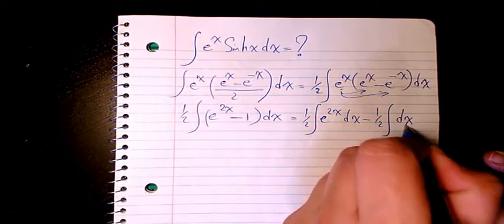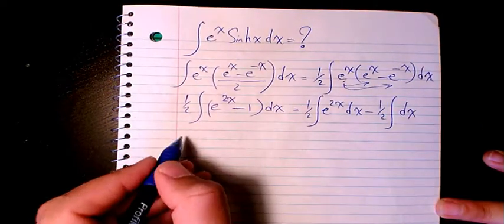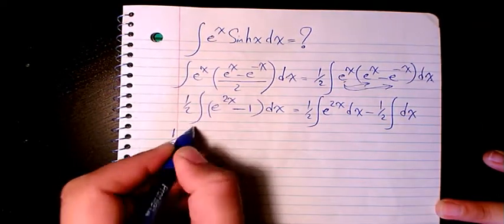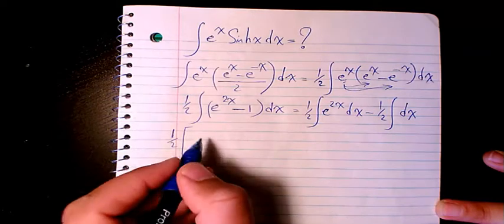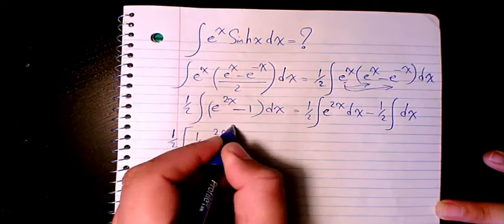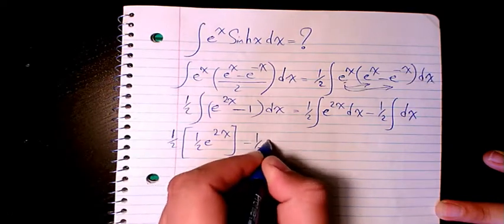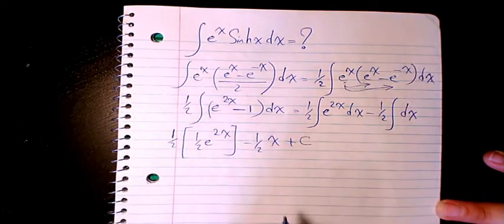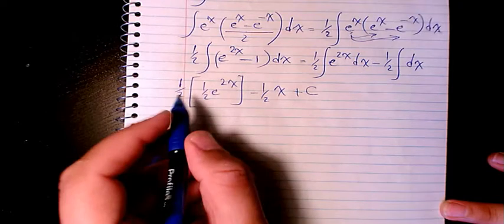Then it will be 1 over 2, integration of e to the power of 2x. It will be 1 over 2 e to the power of 2x minus 1 over 2x plus c.